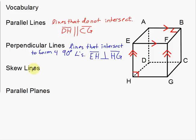Next on the list: skew lines. When dealing with three-dimensional objects like this cube, there are certain lines that do not interact with each other at all — we call these skew lines. An example is EH and CG. EH goes up and down; CG goes back and forth. They don't intersect and they're never going to cross each other. They're not parallel either — they really don't interact at all. Skew lines can only exist in three-dimensional space.